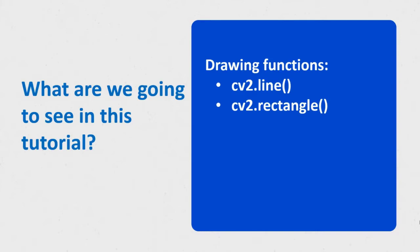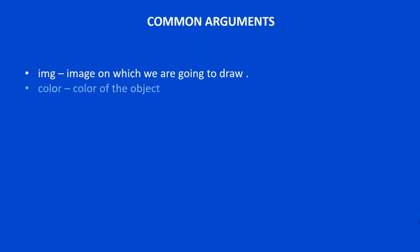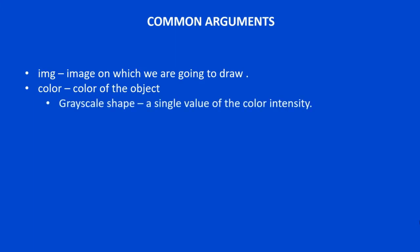First let us look into some of the common arguments. The first common argument is the image — that is the image on which we are going to draw. We have to specify the image name on which we are going to draw the line or the rectangle. The next common argument is the color, which is of two types: grayscale and normal color.